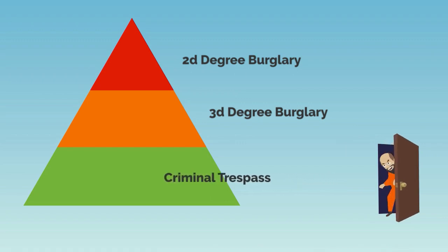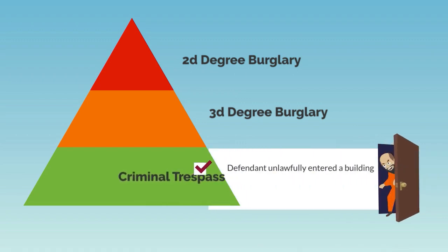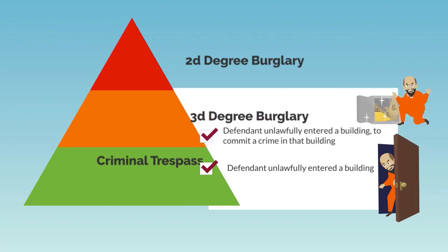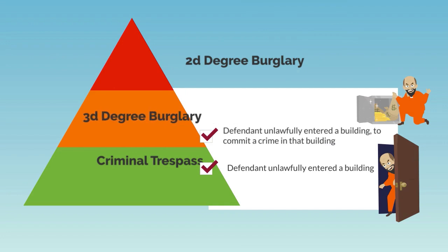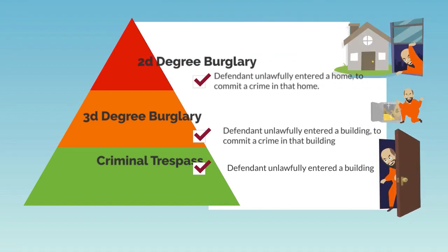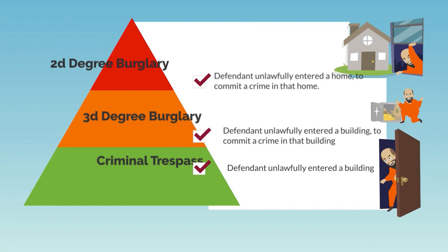To prove that the defendant is guilty of criminal trespass, the state only needs to prove that the defendant unlawfully entered a building. For third-degree burglary, the defendant must unlawfully enter the building intending to commit a crime in that building. And second-degree burglary means that the defendant unlawfully entered someone's home, a dwelling, intending to commit a crime in that home.